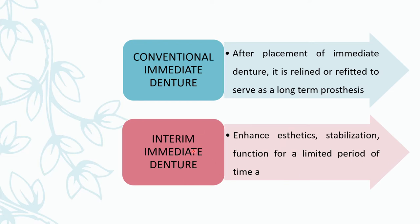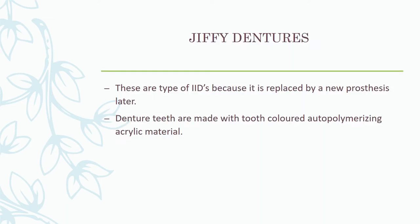The interim immediate denture can be done in between, for example, before an FPD or implant placement — such as in a young patient with a single missing tooth. We have done this type in our department. Coming to the jiffy denture, this is one type of interim immediate denture.